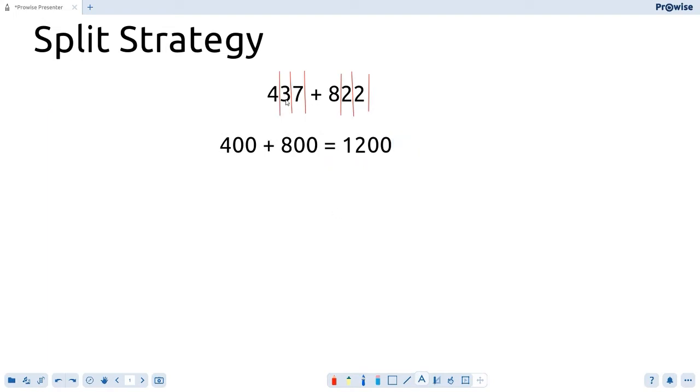The next place value column is the tens. We've got three tens and two tens, which is 30 plus 20. We know that equals 50 from our previous example.